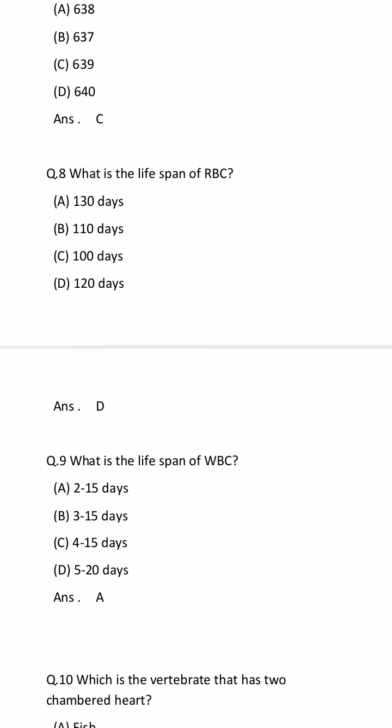Question number 8: What is the lifespan of RBC, which is red blood cells? Options: Option A: 130 days. Option B: 110 days. Option C: 100 days. Option D: 120 days. Your timeline starts now. The time is finished. The answer is Option D: 120 days — the lifespan of red blood cells.